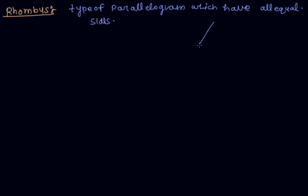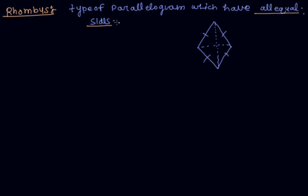If I draw a rhombus, it looks like this diagram. This is a rhombus in which all sides are equal. So in a rhombus, all properties of a parallelogram apply, plus the property that all sides are equal.